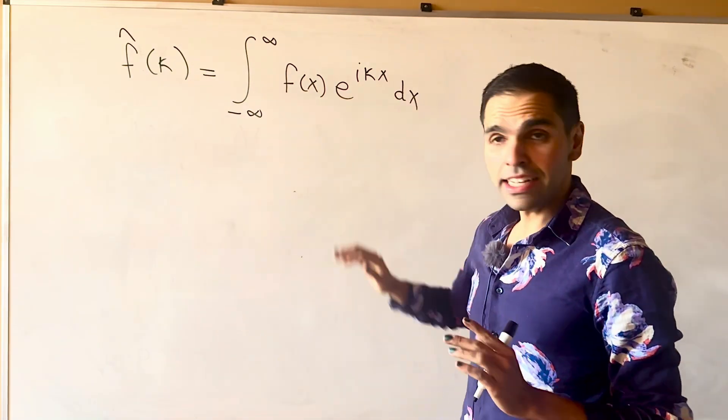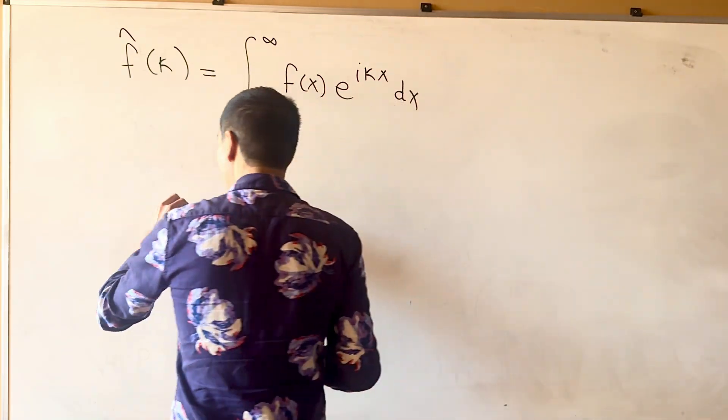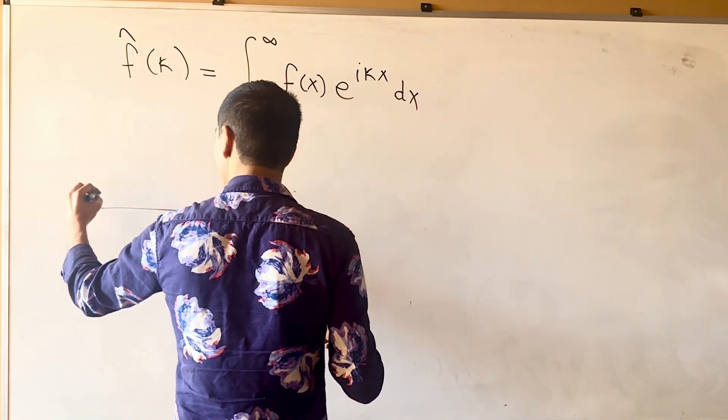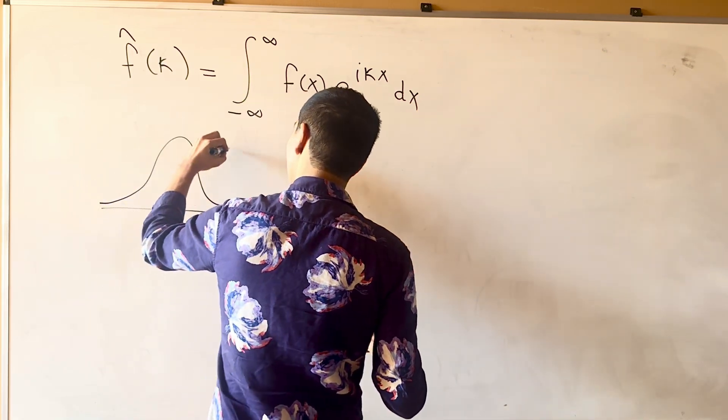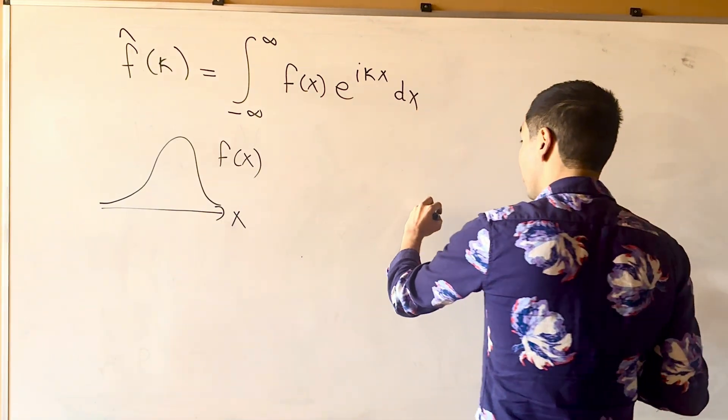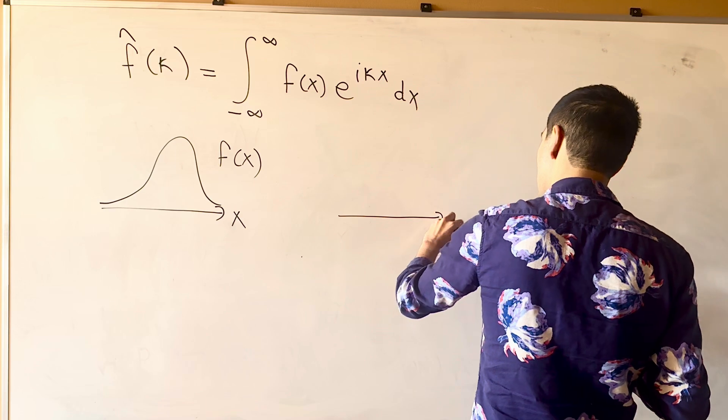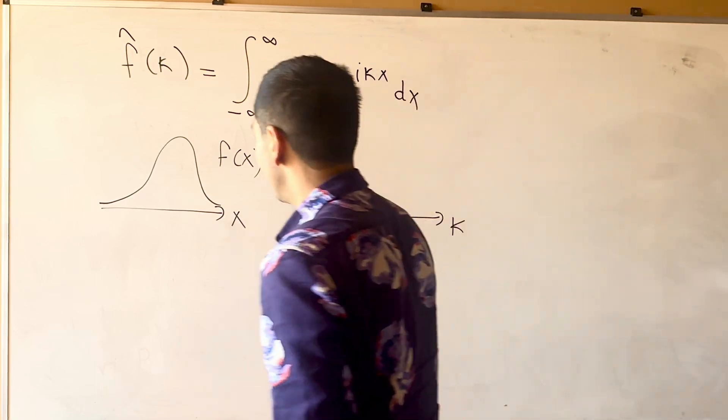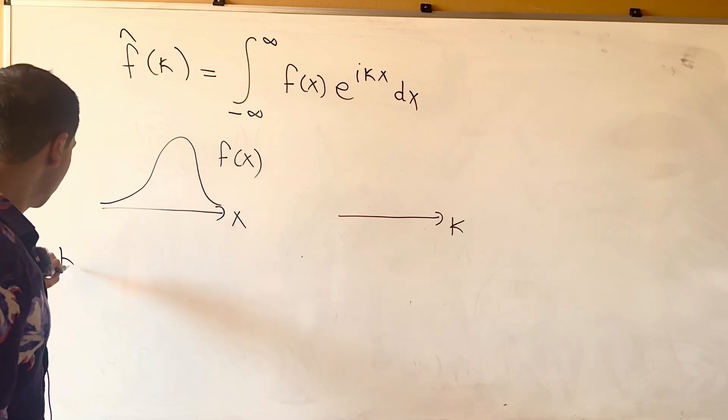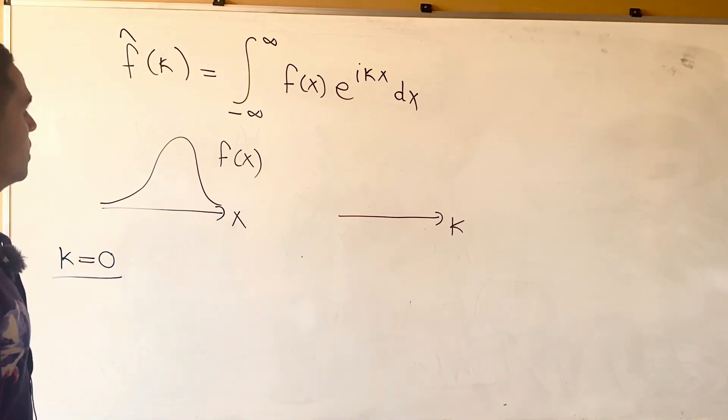Because, for instance, let's take the function f of x is a bell curve, for instance. So, let's take f of x, and let's see what f hat of kappa looks like. Now, for instance, let's plug this in as kappa equals 0, and let's see what happens.